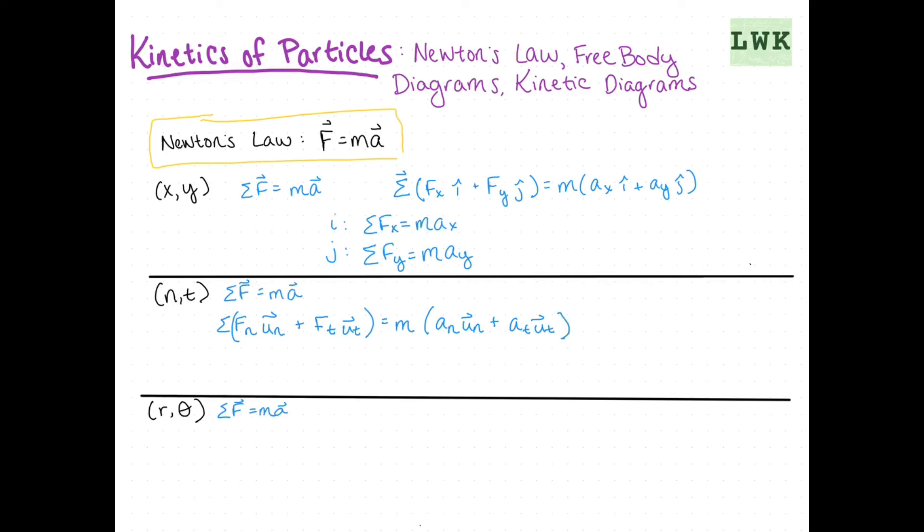Or again, we can say in the n, sum of the forces in the n direction equals the mass times a_n. From what we know about normal and tangential, we know our normal acceleration is going to be equal to v squared over rho.